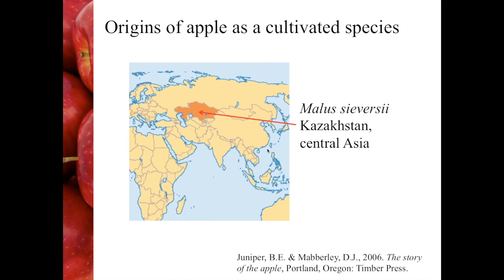As a cultivated species, we think apple came predominantly from Malus sieversii from Kazakhstan in Central Asia. In this area there are still wild forests of Malus sieversii, and it's been the target of a number of collecting trips by several different people over the last few decades. There is Malus sieversii spread around the world into germplasm collections, as well as at its origin. There's a nice article referenced on screen that explains how we think apple came to be the popular fruit it is today.